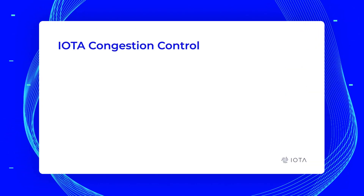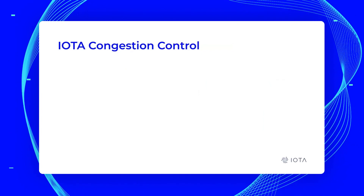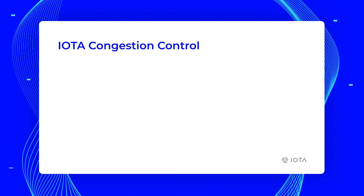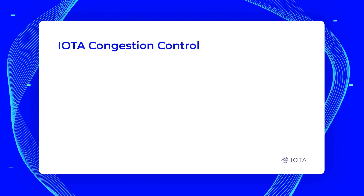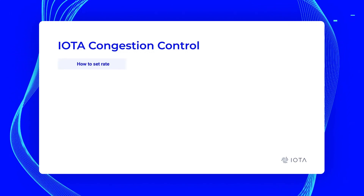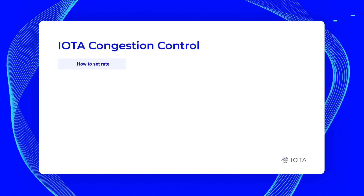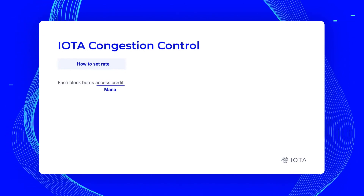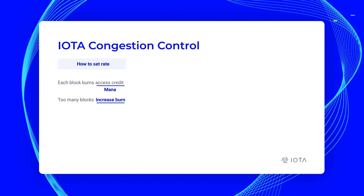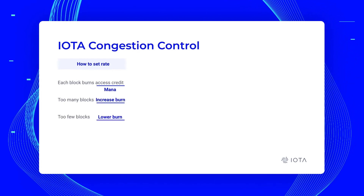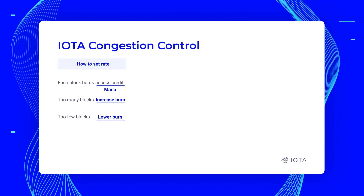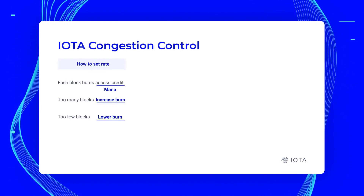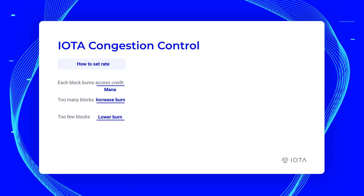What we haven't talked about is how the blocks are created. It's not going to work for every single user to just create as many blocks as they want, because everyone has to validate the blocks. We have to regulate this somehow — this is the IOTA congestion control, done in three steps. The first step is how do we set the rate? Each block burns some access credit that we call mana. When we have too many blocks, we increase how much mana you need to burn. If there are too few blocks, we lower the burn rate. This makes the burn rate get adjusted so that we always get a happy medium — just the right number of blocks so that the network's resources are properly allocated.